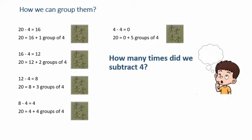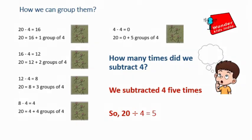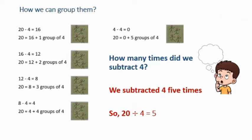How many times did we subtract 4? We subtracted 4, 5 times. So 20 divided by 4 is equal to 5. In this case nothing is left in the end, so the remainder is 0 and the quotient is 5.